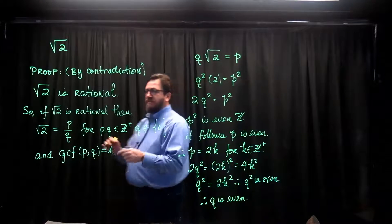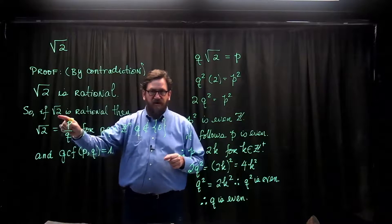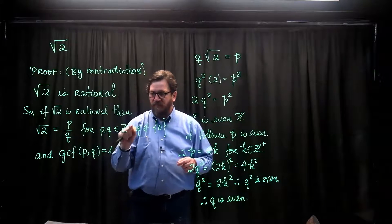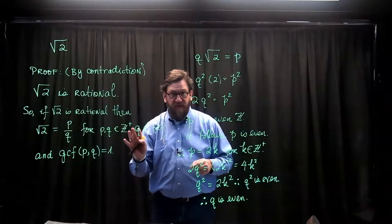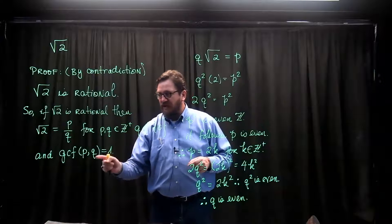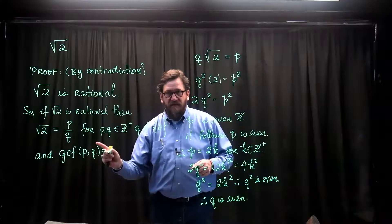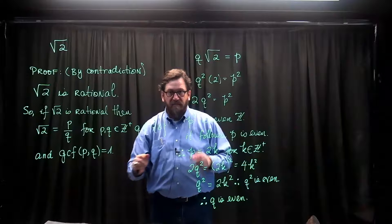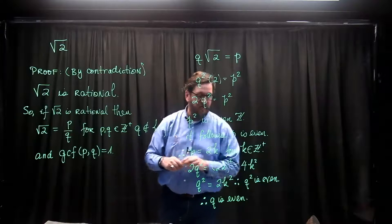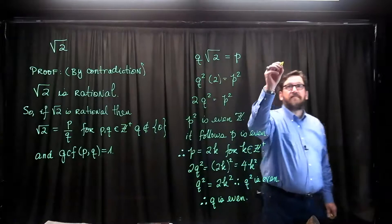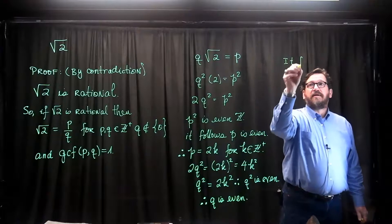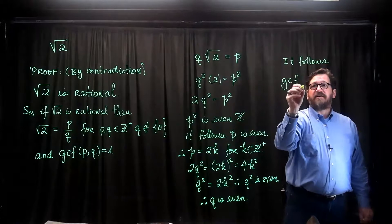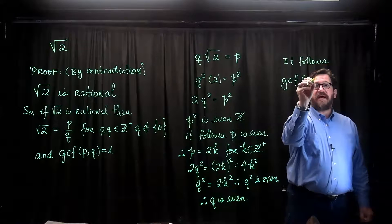But way over here, when we said that the square root of 2 is rational, we said we could write it as p over q for some positive integers. But notice the condition: the greatest common factor of p and q had to be 1. But I have just demonstrated that p and q both have factors of 2, so it follows that the greatest common factor of p and q is at least 2.